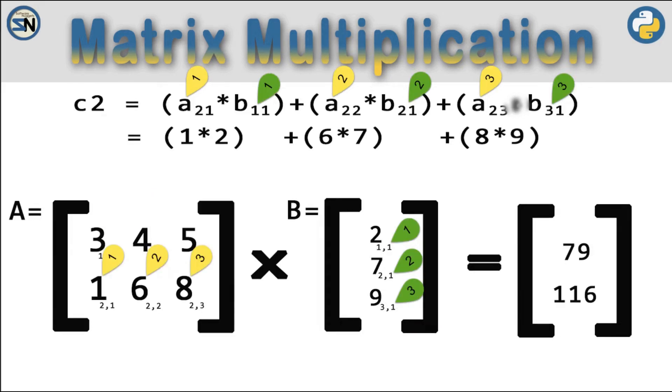Let us solve C2. We're going to start with A21, which is 1, times B11, times 2, is 2. Let's go to the next one. 6 times 7, that's 42. And then the last one is 8 times 9, which is 72. So 2 plus 42 plus 72 is 116.